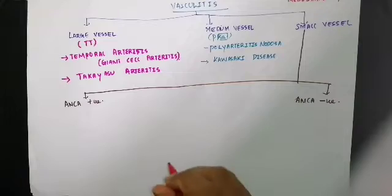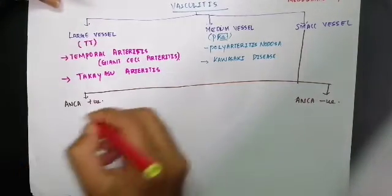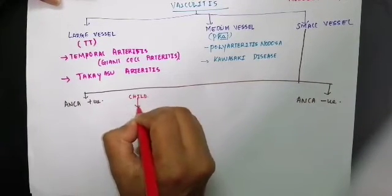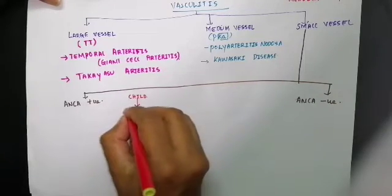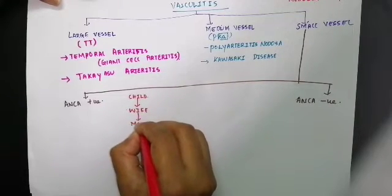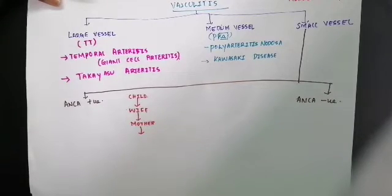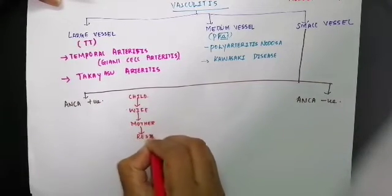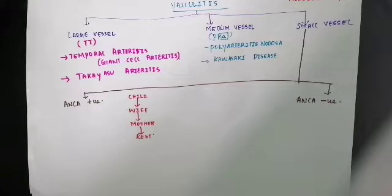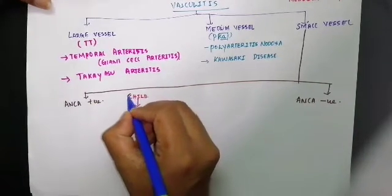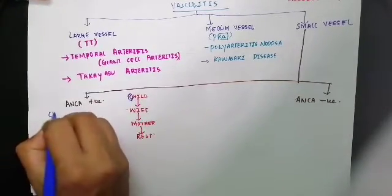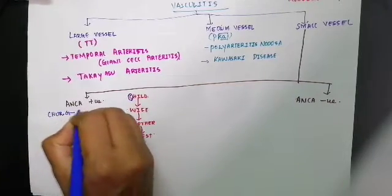For ANCA-positive vasculitis, use the mnemonic: 'A child becomes wife, then mother, then takes rest.' C from child stands for Churg-Strauss syndrome. W from wife stands for Wegener's granulomatosis. M from mother stands for Microscopic polyangiitis. R from rest stands for Renal limited vasculitis, also known as crescentic glomerulonephritis.